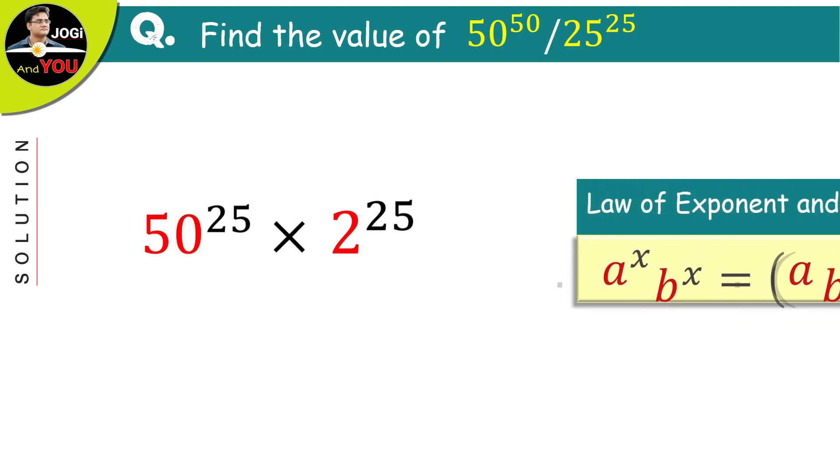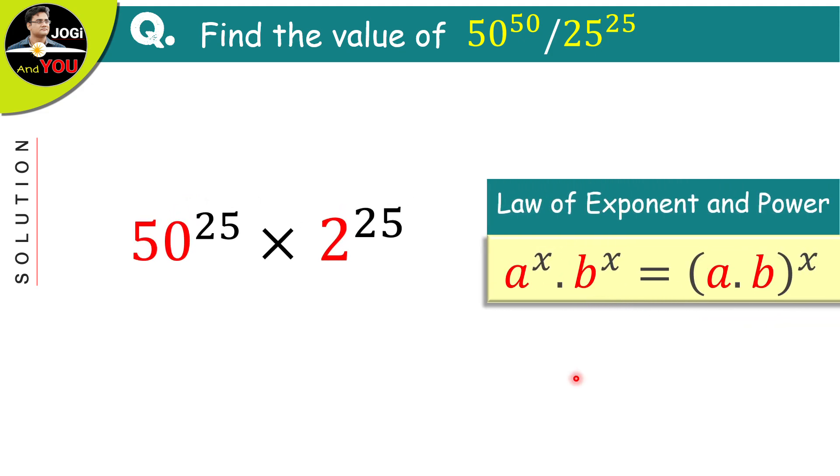Here we have one more property of powers to move forward from here. And that property is, if we have two different bases as in multiple with the same power, then we will multiply both the bases and place the power as common. Just like this. Let's do it like that. And we have 50 multiplied by 2 all raised to the power of 25. After calculation, we have 100 to the power of 25.